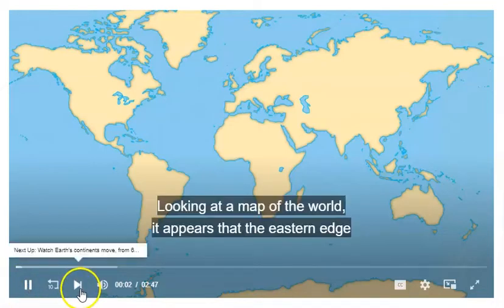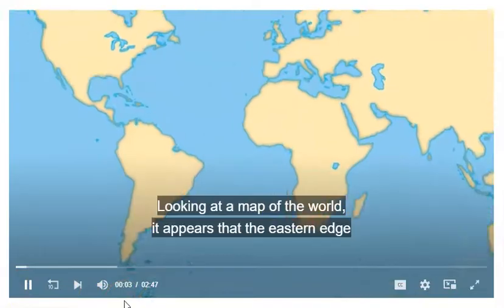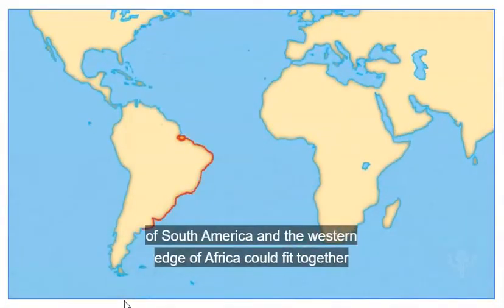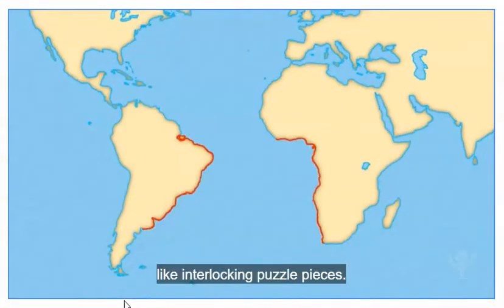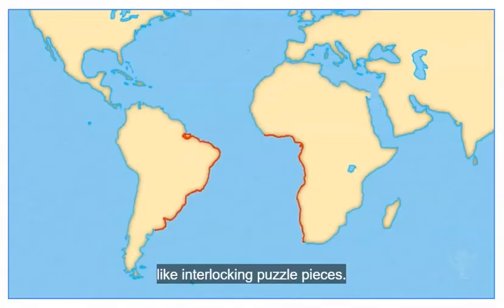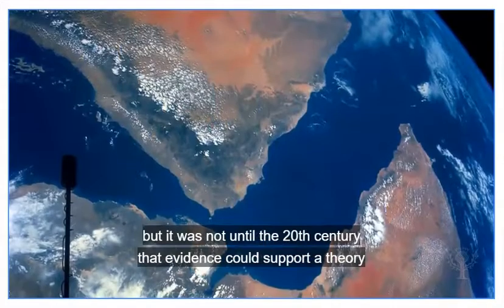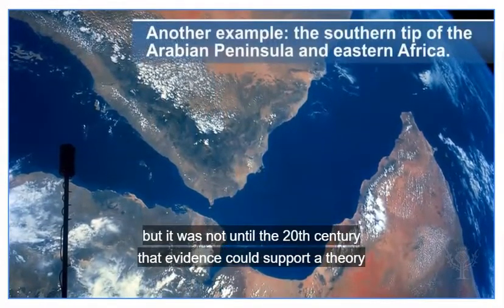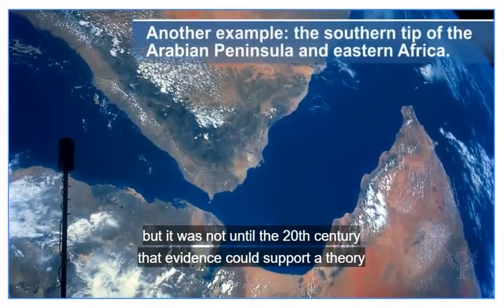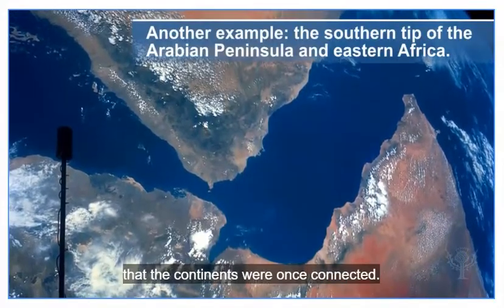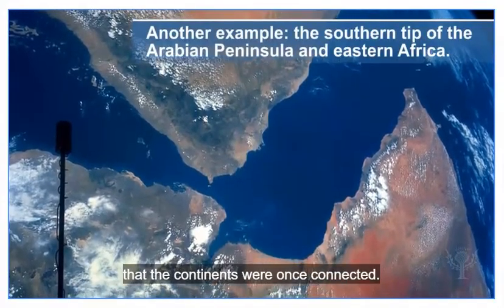Looking at a map of the world, it appears that the eastern edge of South America and the western edge of Africa could fit together like interlocking puzzle pieces. Scientists have long noticed the similarity between the two coastlines, but it was not until the twentieth century that evidence could support a theory that the continents were once connected.